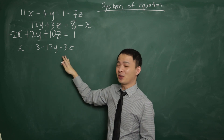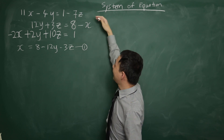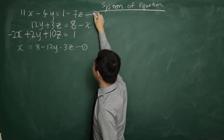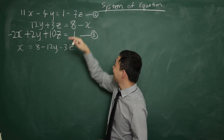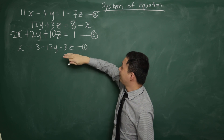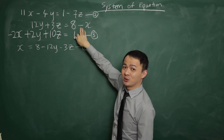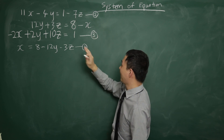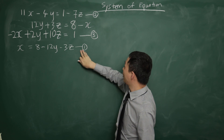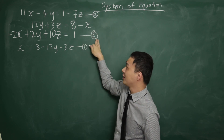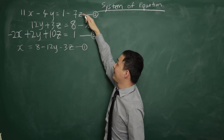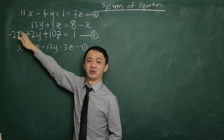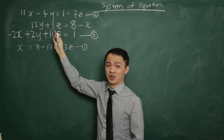After I form the new equation — x equals 8 minus 12y minus 3z — I'll call this my first equation. I label the original first equation as the second and the original third as the third, skipping the original second equation because my first equation came from it. I want to avoid substituting back into the same equation. What I'll do next is substitute the first equation into both the second and third equations, so both will only have y and z remaining.